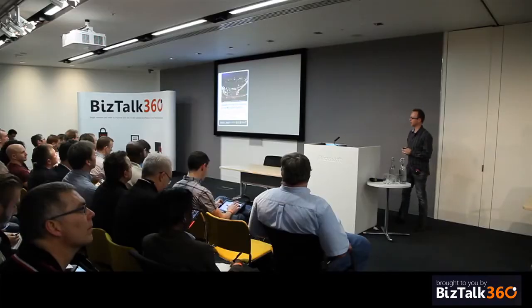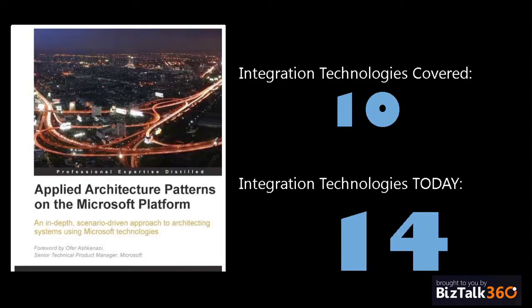A few years ago I wrote a book with a few other good-looking fellows like Stephen Thomas — Applied Architecture Patterns — and it looked at how you evaluate the whole set of technologies that Microsoft offers and choose the right thing. We looked at about 10 different technologies in general, this was about three years ago.